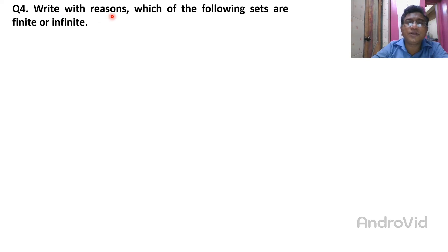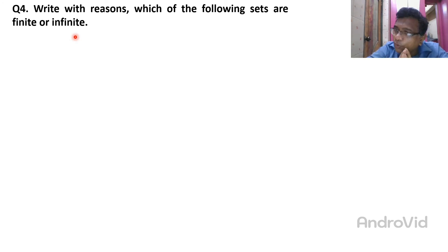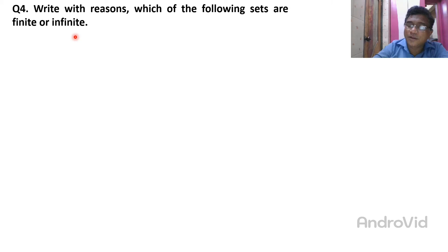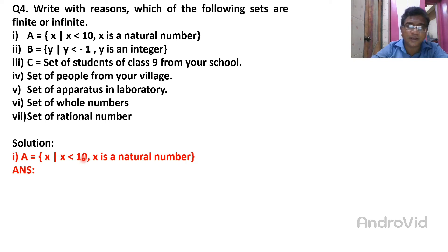Problem number 4: Write with reason which of the following sets are finite or infinite. Finite set means the set is terminated — it has an end point you know. Infinite means the set is not terminated, it has no end. The first example: Set A is the set of X such that X is smaller than 10 and X is a natural number.